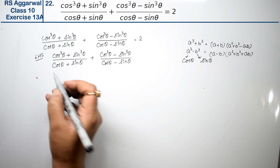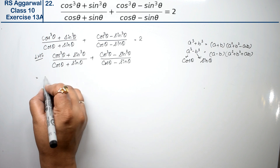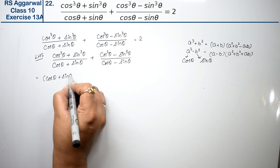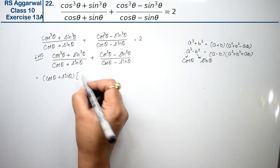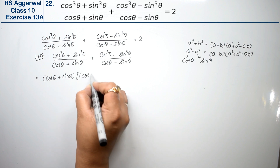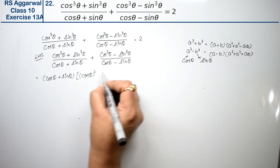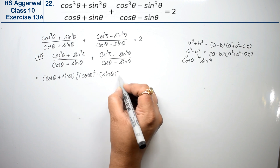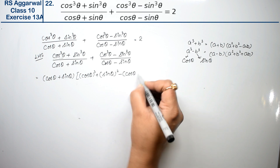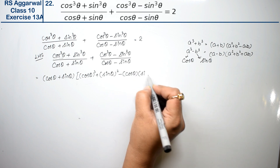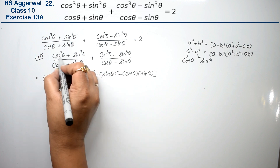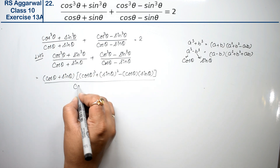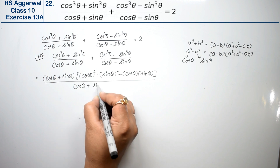So applying the a³ + b³ formula to the first term, we get (cosθ + sinθ)(cos²θ + sin²θ - cosθ·sinθ), all divided by (cosθ + sinθ).